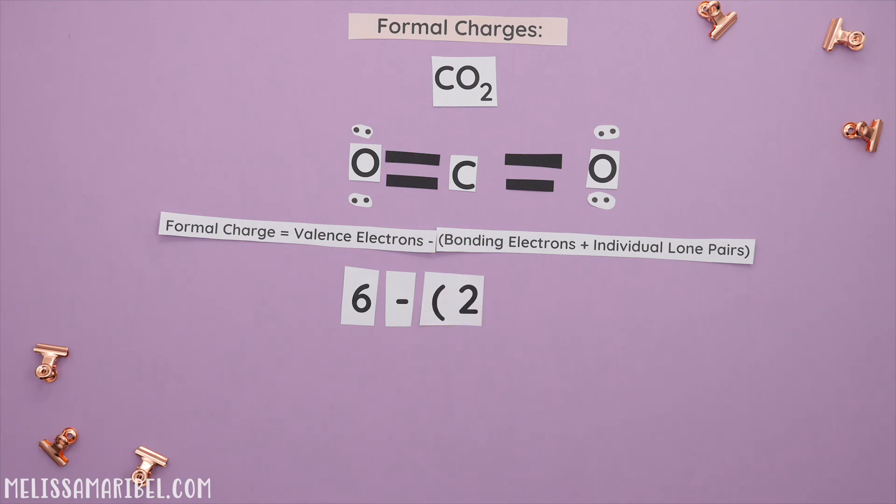Now count each individual lone pair or really each electron on that oxygen. So we have one, two, three, four. Remember order of operations or PEMDAS. We will start with parentheses first and then subtract. So our formal charge is zero. The oxygen on the right would have the same formal charge since it is exactly the same as the one on the left.